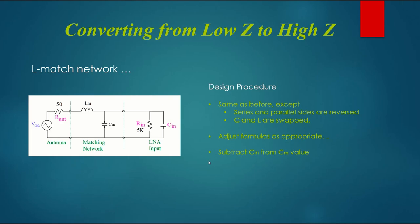How do we convert from low to high impedance? Remember, matching networks work in either direction. In this case, we took the L-network and turned it around. The series and parallel sides are reversed. In addition, we've swapped the capacitor and inductor locations. To design this, we adjust the formulas as appropriate for the CL swap.